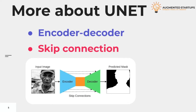If you look closely at this figure, you will be able to see the arrows representing the skip connection process. This process helps to transfer the selected features directly from the encoder to the decoder part of the network, which as a result helps the decoder to generate a better segmentation mask.